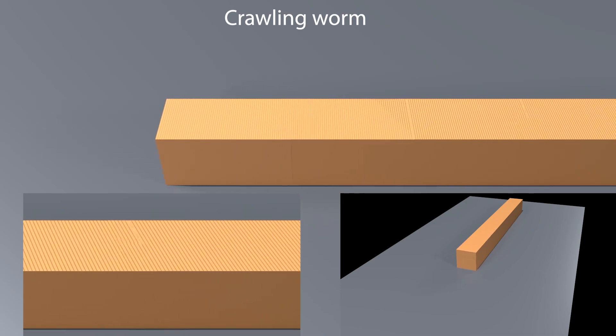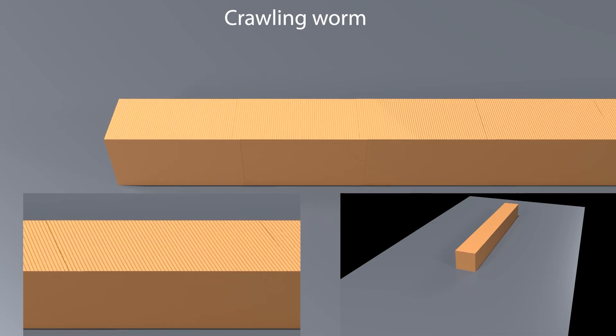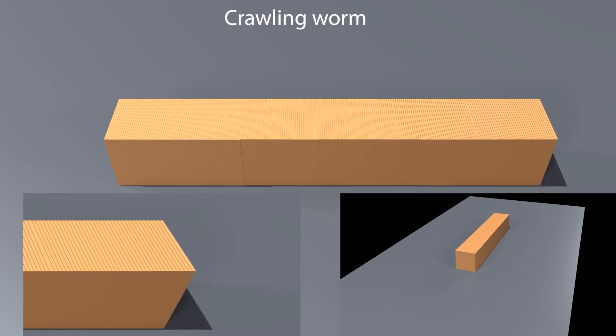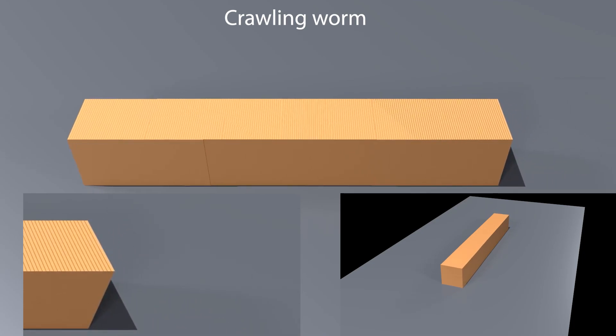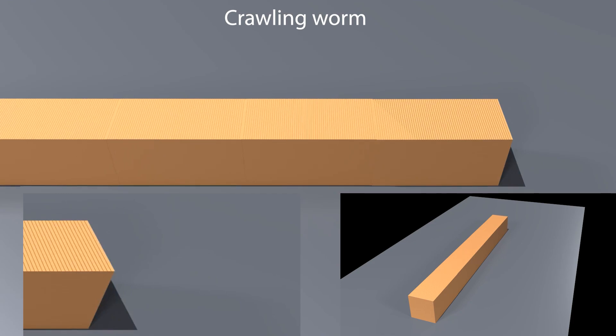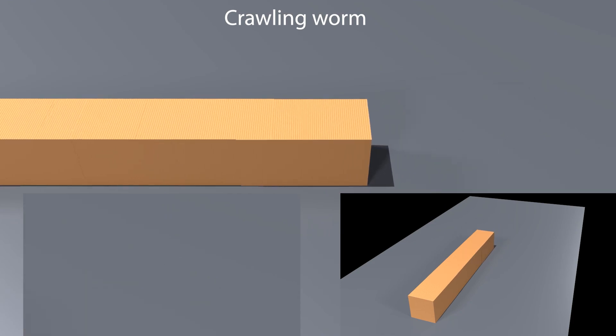Here a worm is modeled using several boxes with a sawtooth normal texture. A distance joint contracts and expands the relative distance between the boxes, which causes the worm to begin to crawl forward.